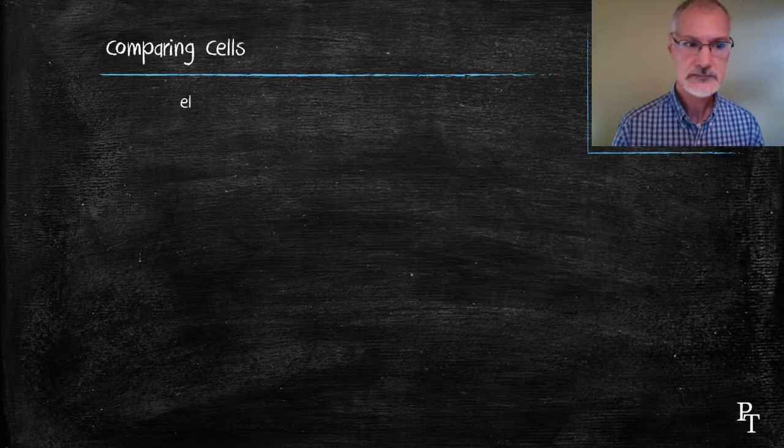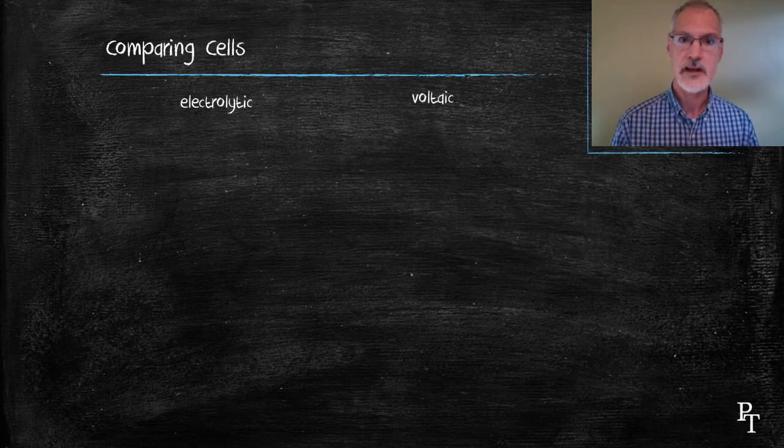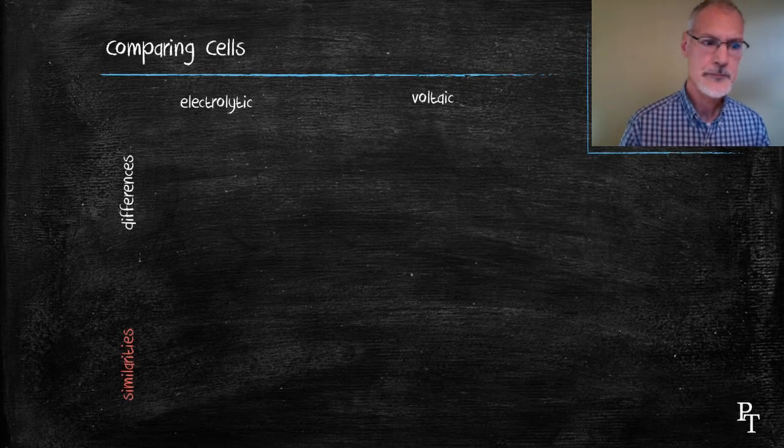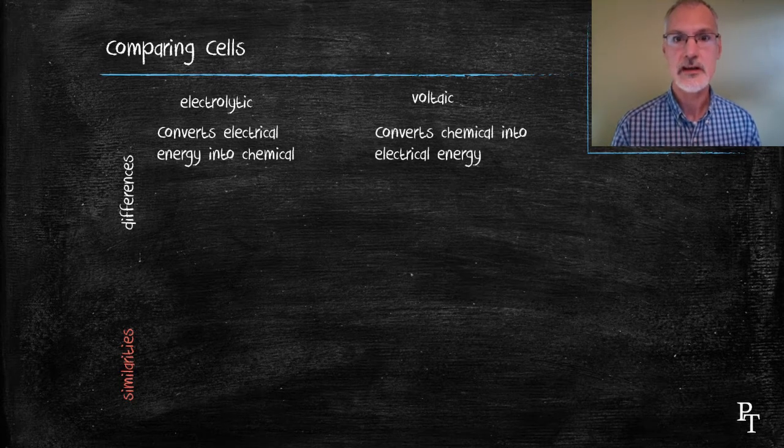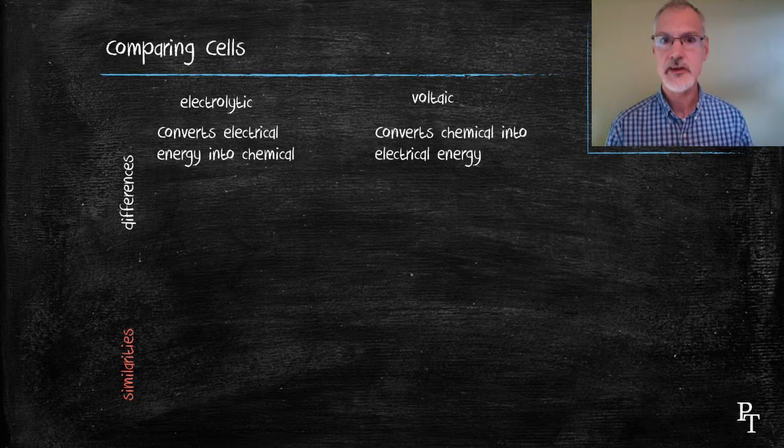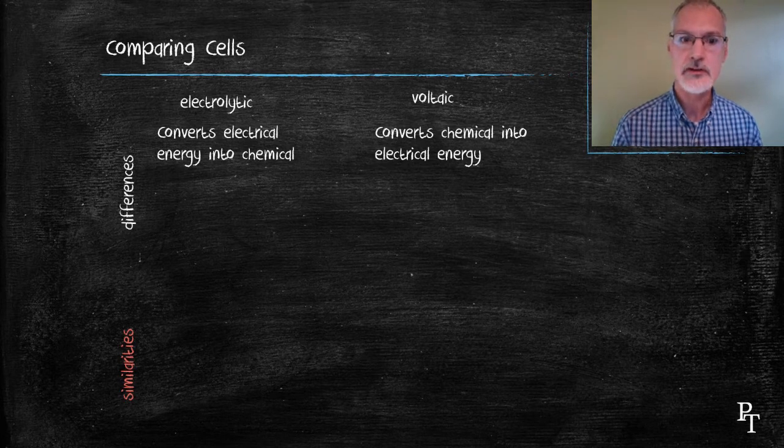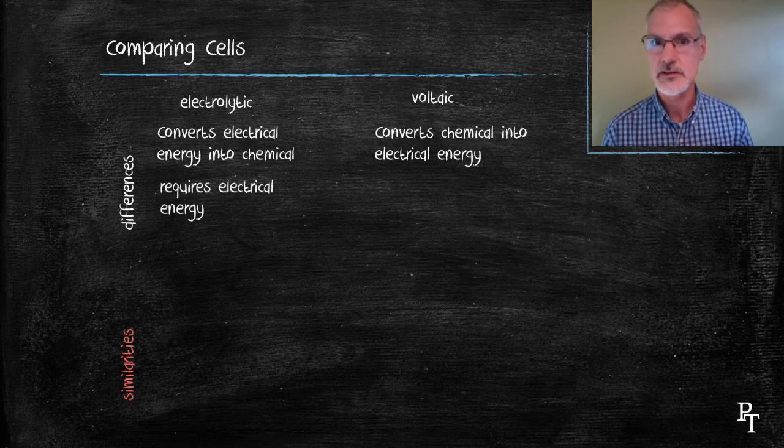Let's compare the cells, the electrolytic, which we did today, and voltaic from the past. First off, the electrolytic cell takes electrical energy and converts it into chemical energy. Voltaic cell does the opposite. It takes chemical energy and converts it into electrical energy.